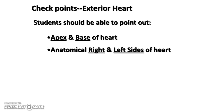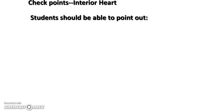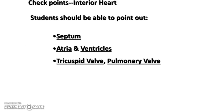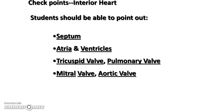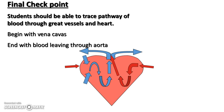If you have successfully reviewed the lab material, you should be able to show the apex, base, right and left sides of the heart, the auricles, and the coronary arteries and vessels on the exterior. For the interior, you should point out the septum separating the left and right sides, the atria and ventricles, all valves including the tricuspid, pulmonary, mitral (aka bicuspid), and aortic valves, the chordae tendinae, and the papillary muscles. Finally, you should be able to trace the flow of blood through the heart. Feel free to pause and rewatch as needed before the dissection.